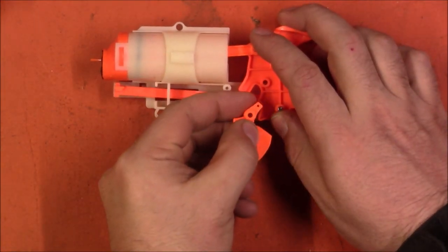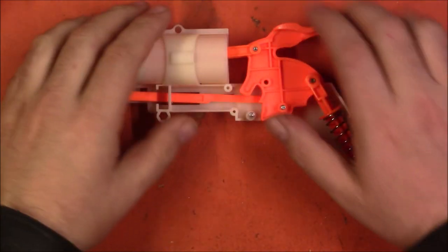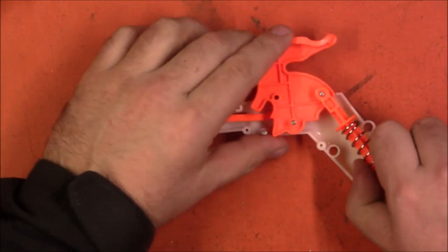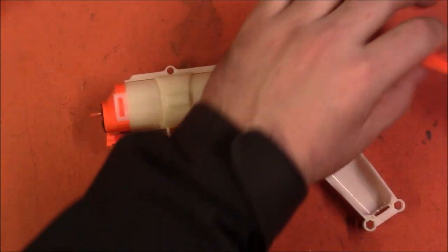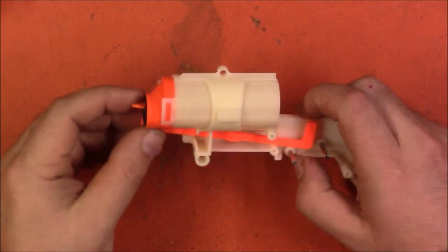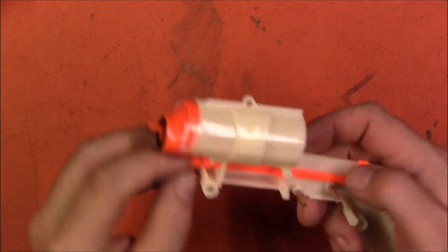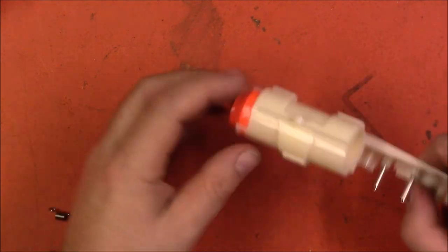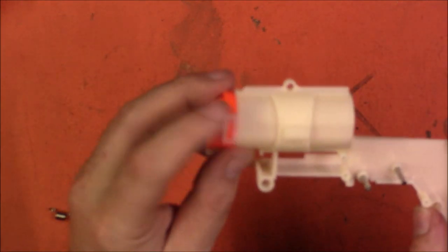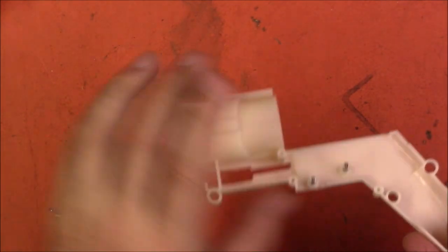The trigger return spring and the cylinder rotation mech. So we can take all of that out. Finally, we have this. That can be gotten out somehow. There we go. We go through that way. And then the AR is captured in there and it is solvent welded. So I recommend leaving that in place.